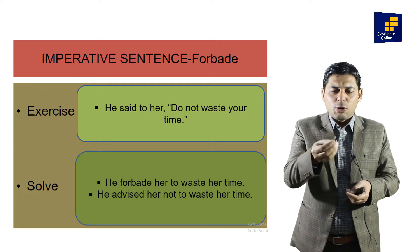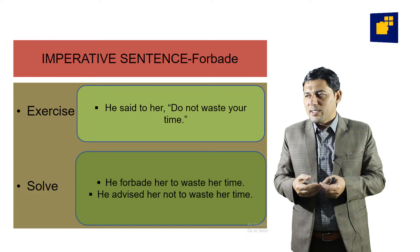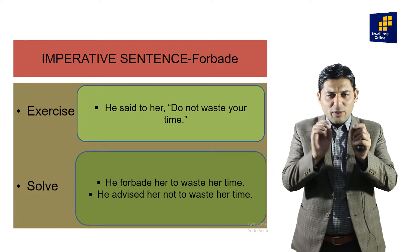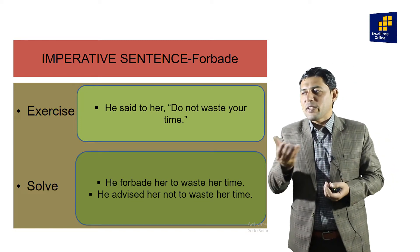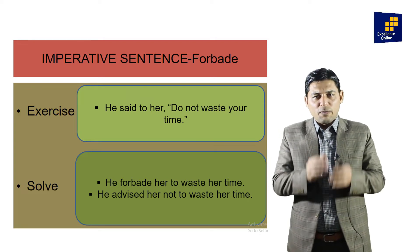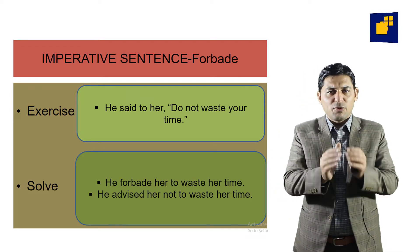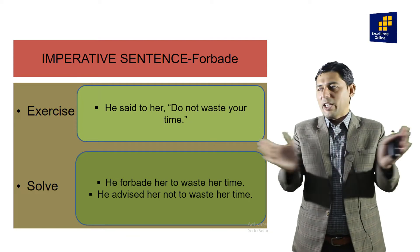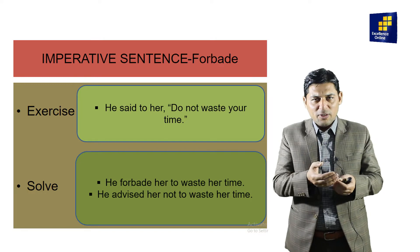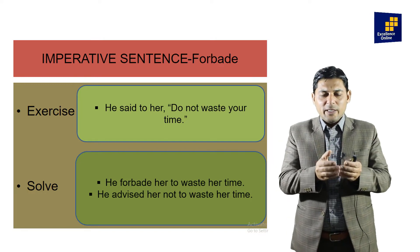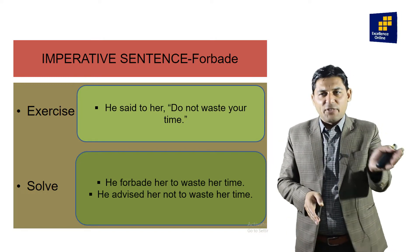When we use 'forbid,' the negative is already inside — so we do not use 'not.' But when we use 'advised,' we must add 'not': 'He advised her not to waste her time.' Both structures are valid, authentic, and correct. Any of them can be used. Whenever we have 'do not' or 'never,' it can be changed with 'forbid' or with 'advised not.'